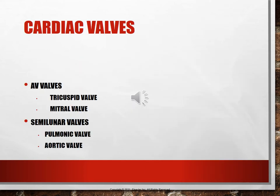The four cardiac valves keep the blood flowing in a forward motion. Pressure changes cause the valves to open and close. The AV valves separate atria from ventricles — the mitral valve separates the left atria from the left ventricle, and the tricuspid valve separates the right atria from the right ventricle. The semilunar valves are the pulmonic valve, separating the right ventricle from the pulmonary artery, and the aortic valve, separating the left ventricle from the aorta.